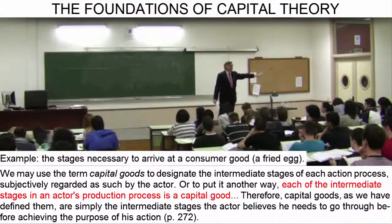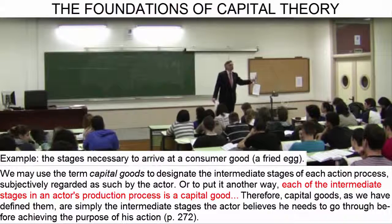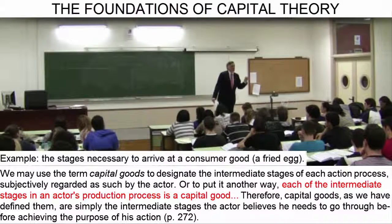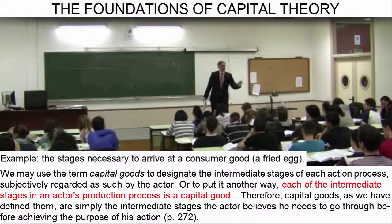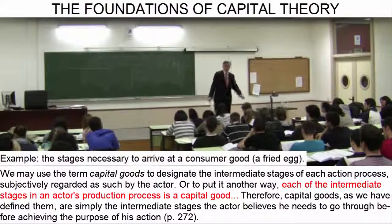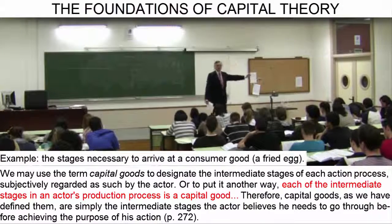The frying pan in the store window before we buy it is a capital good. And the frying pan in our kitchen, just before we fill it with oil, is a capital good. Each one of the prior stages we must pass through in an action or production process before we arrive at the final consumer good materializes in the form of a capital good.